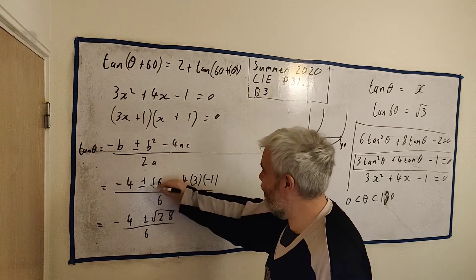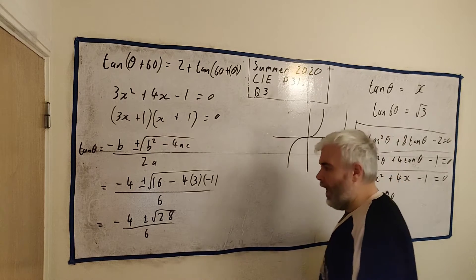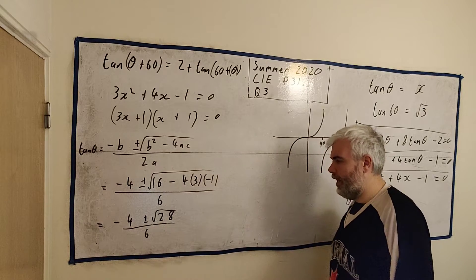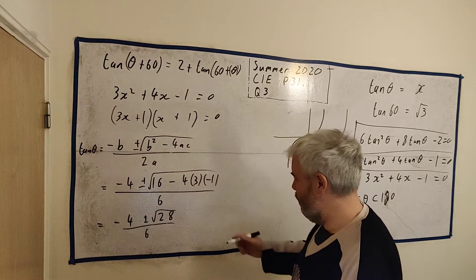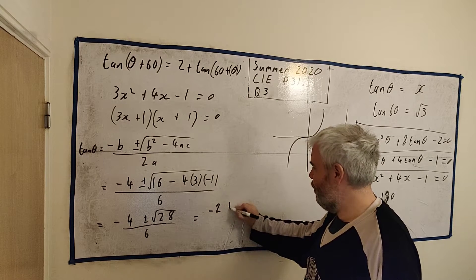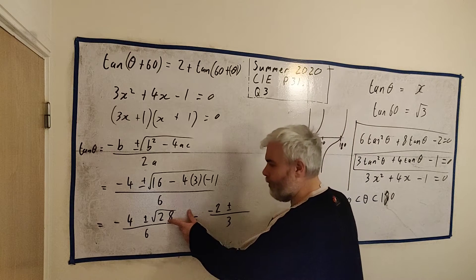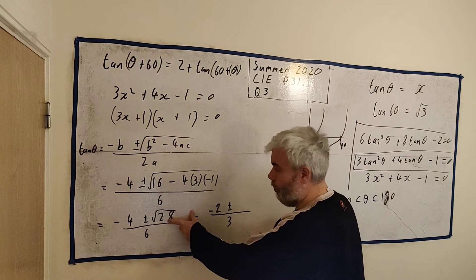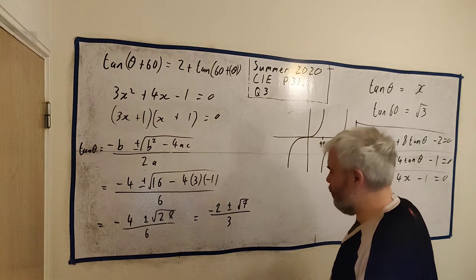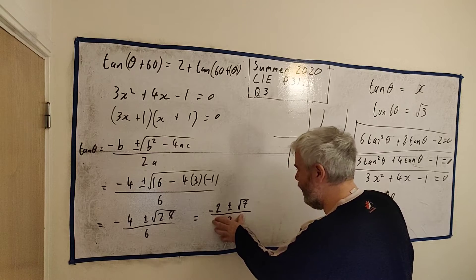We could divide everything by 2. There's no real need to do that. But let's see, -2 ± √7 over 3. The square root of 2² is 4. So divide this by 4. We get the square root of 7. So that's tan θ is these two numbers here.